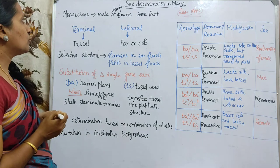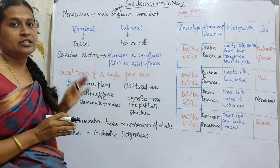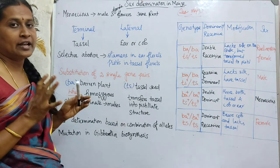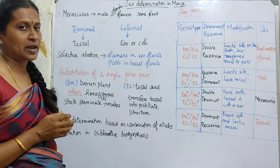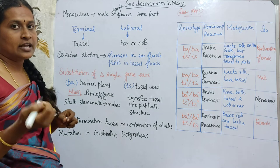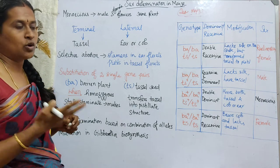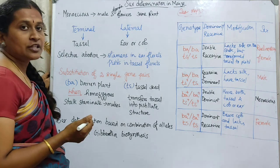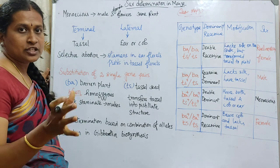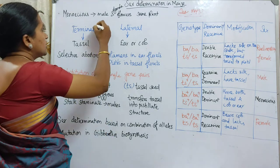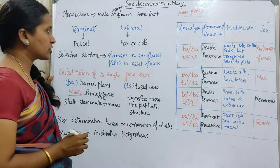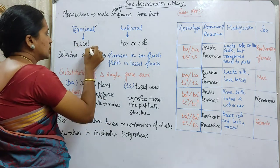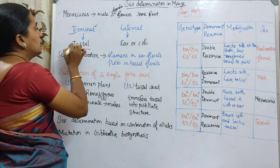This monoecious condition is very common in maize. Both the male and female flowers are on the same plant, but they are present in two different inflorescences. The first is a terminal inflorescence — we call the male flowers the tassel, so terminal tassel.